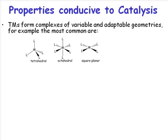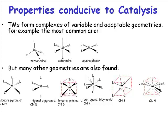But you have much greater flexibility in transition metal chemistry. You can, given the right ligand sets, the right metal, find all sorts of other geometries.